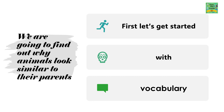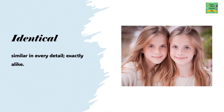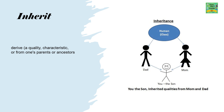First, let's get started with vocabulary. Fingerprint: a fingerprint is an impression left by the friction ridges of a human finger. Identical: similar in every detail, exactly alike. Inherit: derive a quality or characteristic from one's parents or ancestors. For example, you, the son, inherited qualities from mom and dad.